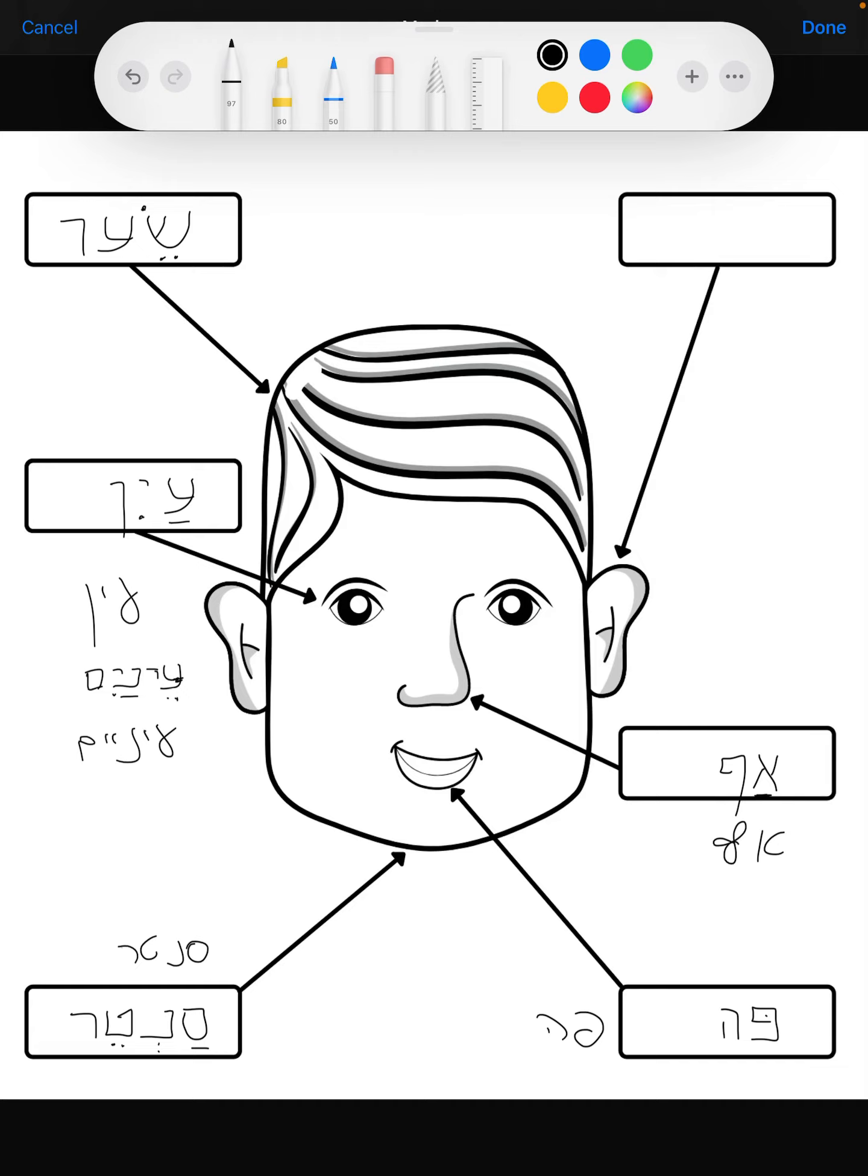And under this sin you have a tsere, the two dots, it's a se sound now. And under the ayn you have a kamatz, which makes it an a sound, so together it's se-ar. In cursive it changes a little bit because we don't have vowels again, and you write it like this.